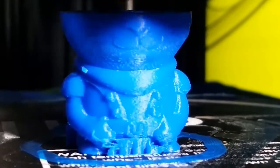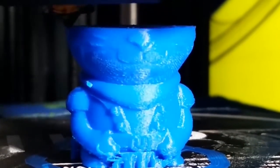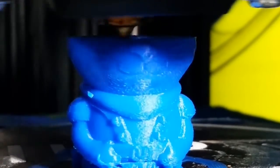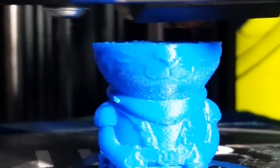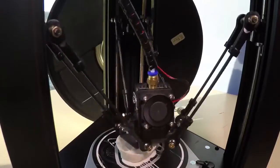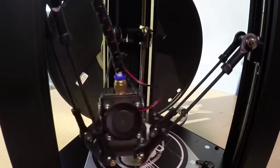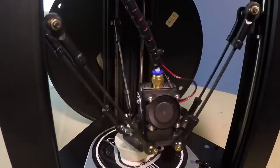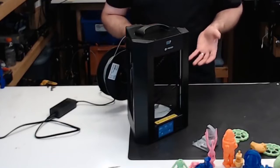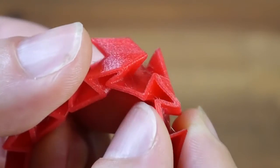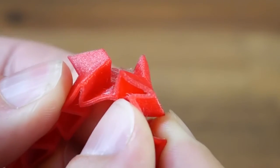We found that the MP Mini Delta was a fairly fast printer, producing our 4-inch tall Thinker test print in 3 hours and 36 minutes in fast mode, and 8 hours and 41 minutes in normal print mode. That's a little faster than other low-cost printers, like the XYZ DaVinci Junior Mix 2.0, which took a little less than 5 hours in a similar fast print. The quality of the prints produced by the MP Mini Delta was decent, though not outstanding.